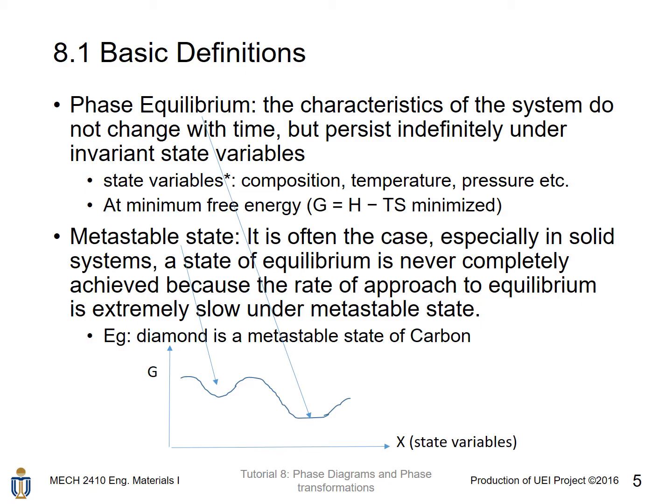Phase equilibrium is a characteristic of a system where properties do not change with time but persist indefinitely under invariant state variables. State variables describe the thermodynamic system — for example, a system's composition, temperature, and pressure. If the state variables do not change, a system in phase equilibrium will have characteristics that do not change with time.